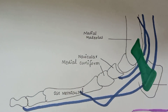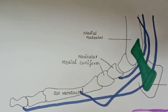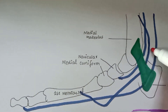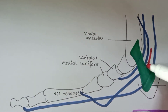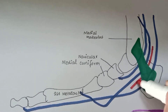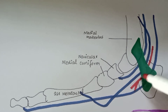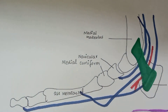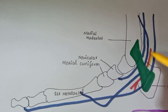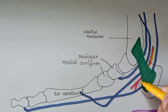The structures that pass deep to the flexor retinaculum also include the posterior tibial artery and the tibial nerve. This is the posterior tibial artery, and this is the posterior tibial nerve.